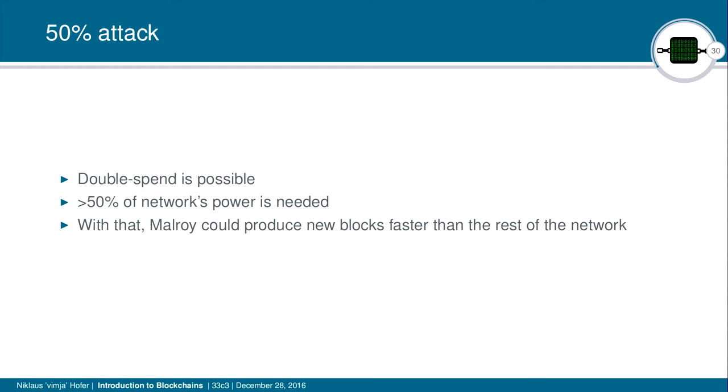The only way Malroy could succeed with his attack would be if he could create blocks faster than the network, which would only work if he has more than 50% of the computing power in the whole network. That's why with Bitcoin and other cryptocurrencies we talk about the 51% attack. There is also a more difficult kind of double spend attack connected to the way the peer-to-peer network works.